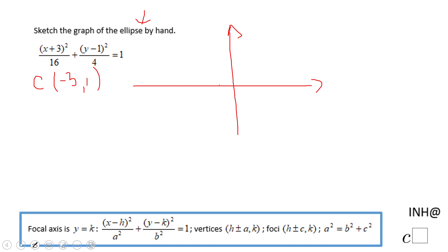So I'm going to go 3 left, 1 up. This is the center, very important to find this first. And then we're going to look at a-square and b-square. If you notice, a-square is 16, which tells me a is plus or minus 4.